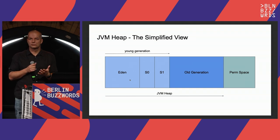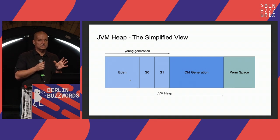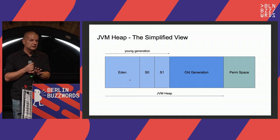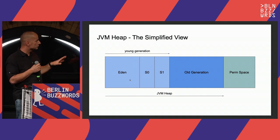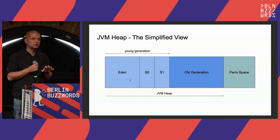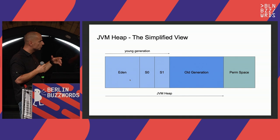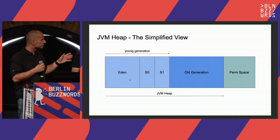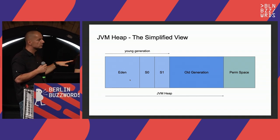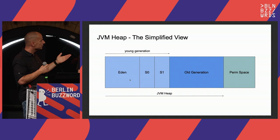We're here for the heap, so let's talk about it. This is a simplified view of the heap — it's divided into spaces like the perm space, old generation, young generation, and so on. Today we'll focus on the JVM heap: the young and old generation combined. Keep in mind this is very simplified and depends on the garbage collector you're using — for example, this view applies to older Java versions like Java 8 with CMS.